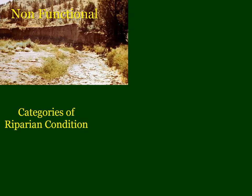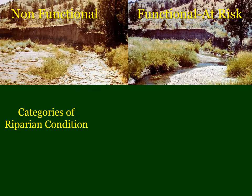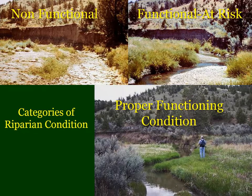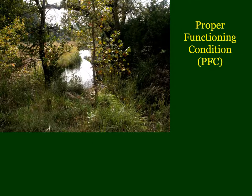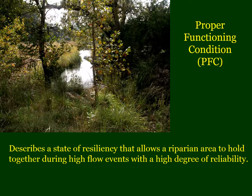A riparian area in PFC describes a state of resiliency that allows it to hold up and hold together during flood events — 10-, 20-, 30-year events, perhaps even a 50- or 75-year event. So they're resilient and stable. And if a big 100-year storm comes through and does a lot of damage, the concept of resiliency means that riparian area will bounce back quicker.